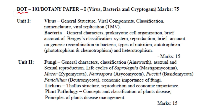First semester, this paper is also known as BOT 101 — this is the paper code, or paper one. It will include virus, bacteria, and cryptogames, and it will carry 75 marks. In unit one, we will discuss the general structure of virus and viral components, and classification of virus and nomenclature.